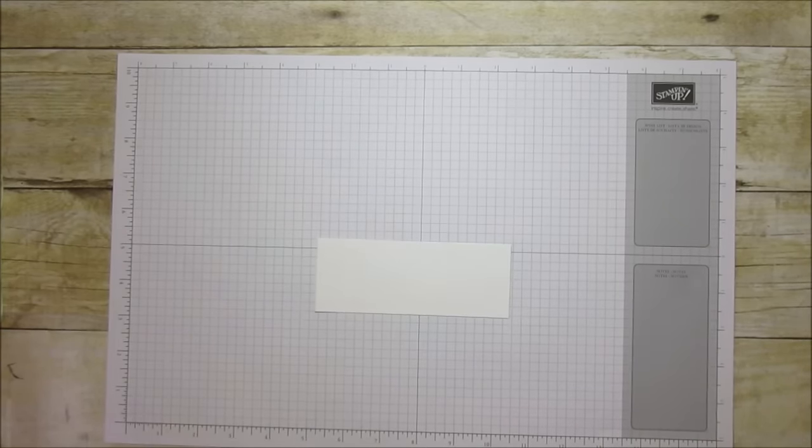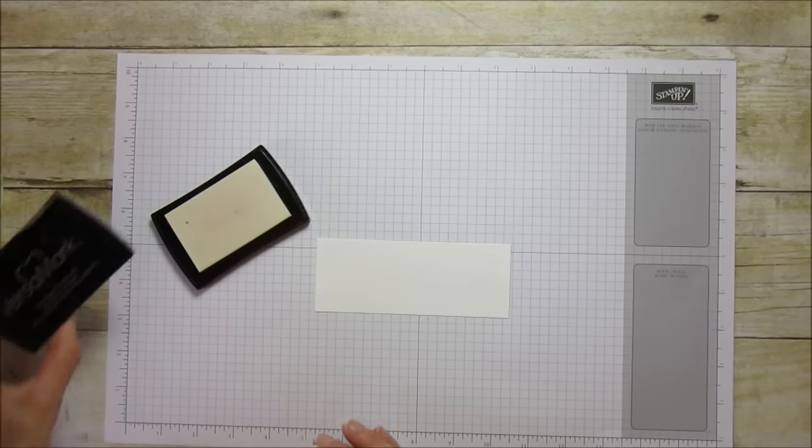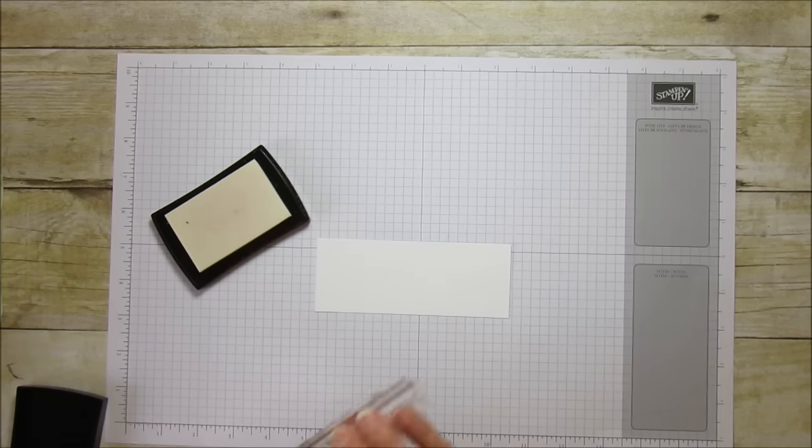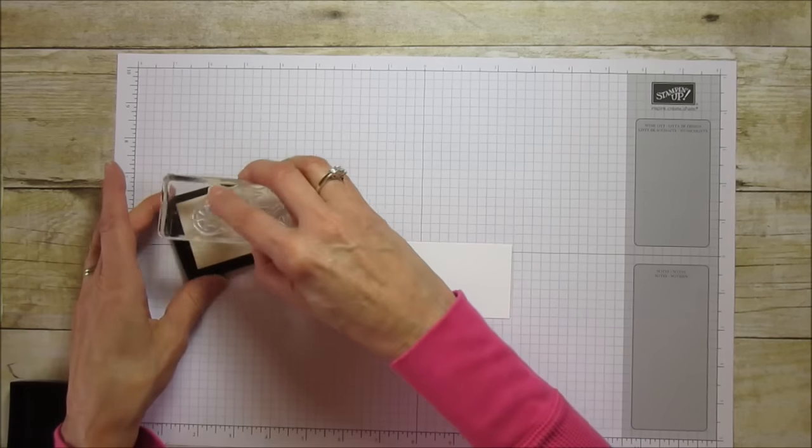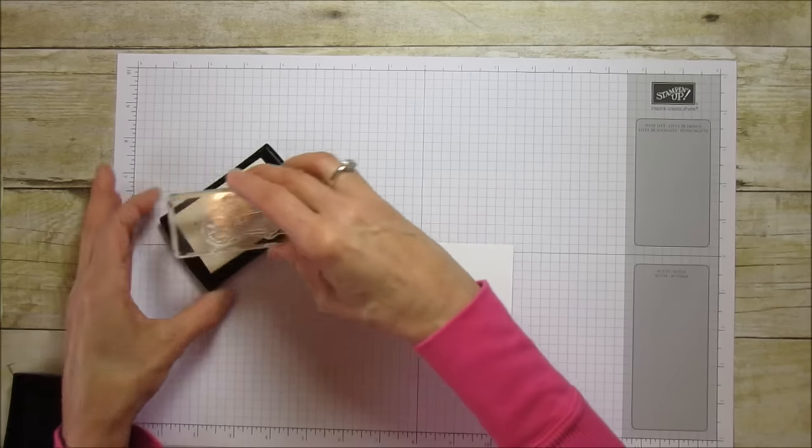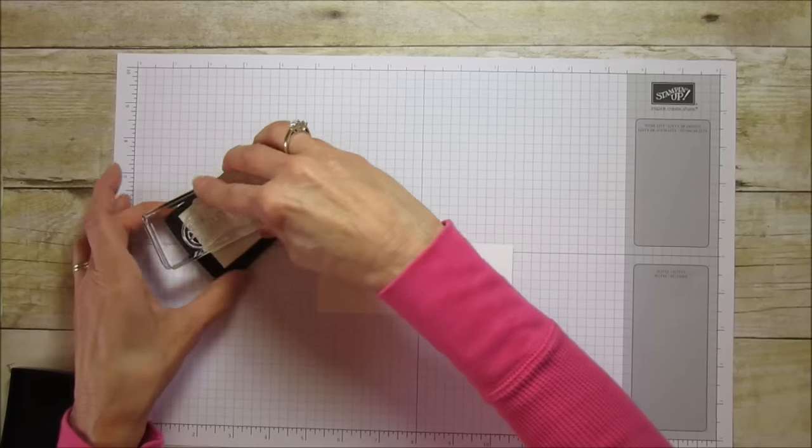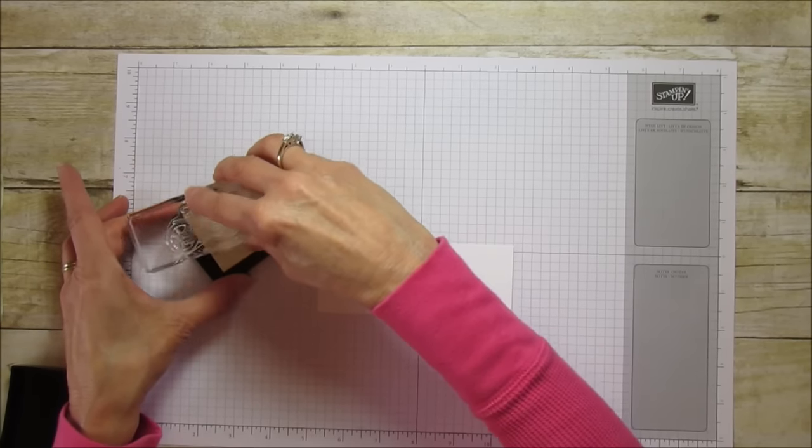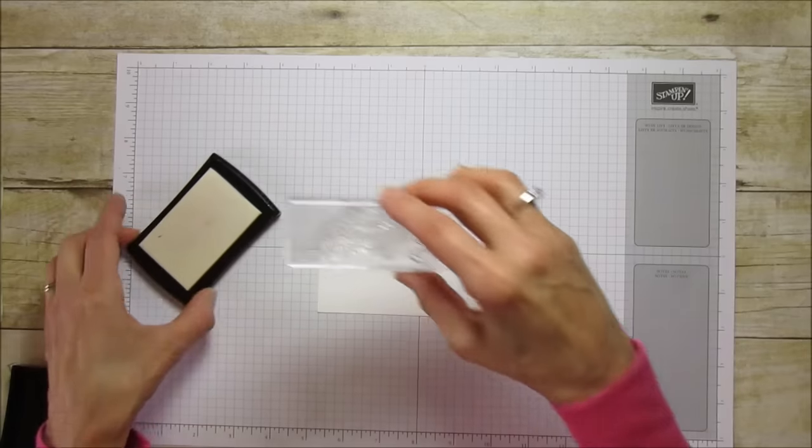You'll need some Versamark watermark stamp ink. You're not going to be able to see this but you will be able to see it on your stamp that it's covered if you look in the light. Make sure you stamp it really well.